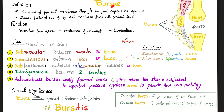What are the types of bursa? According to their site, you have submuscular bursa — meaning they are below the muscles, i.e. between the muscle and the underlying bone. How about subcutaneous? It means under the skin, between the skin and the underlying bone.